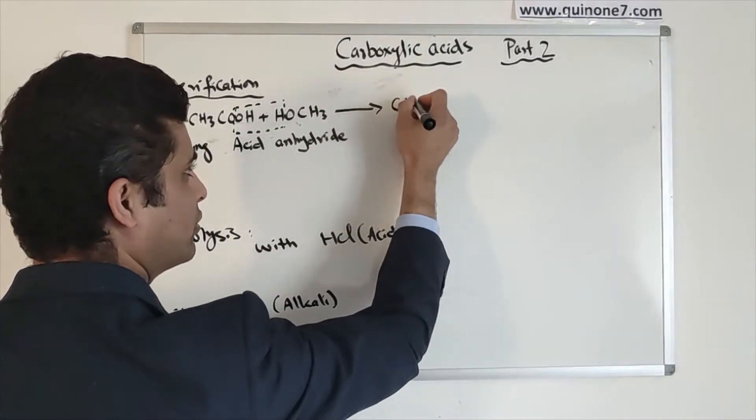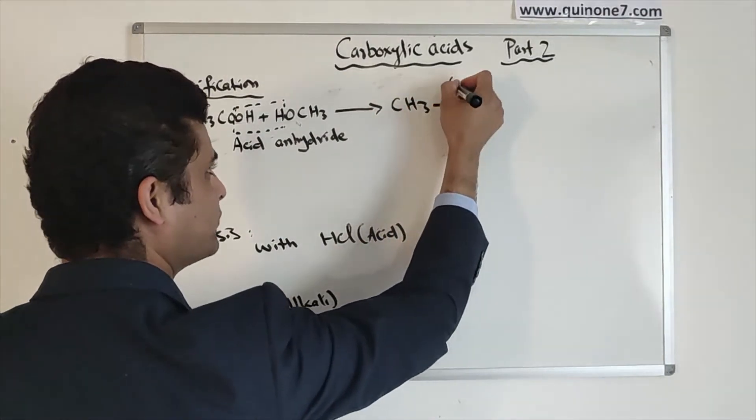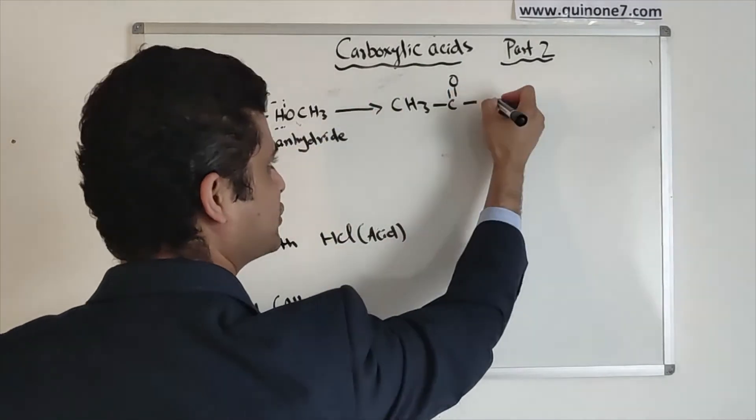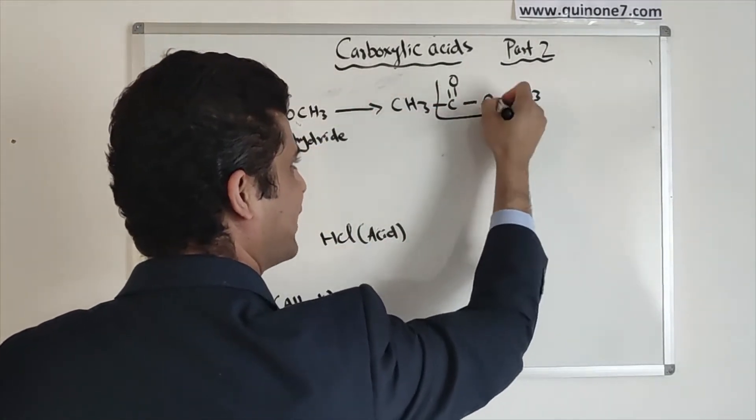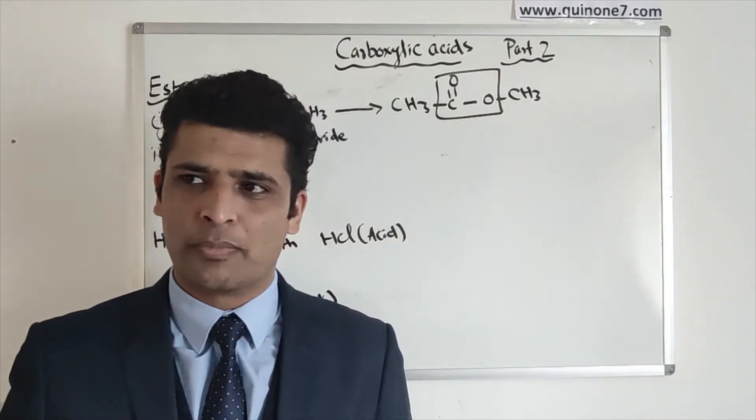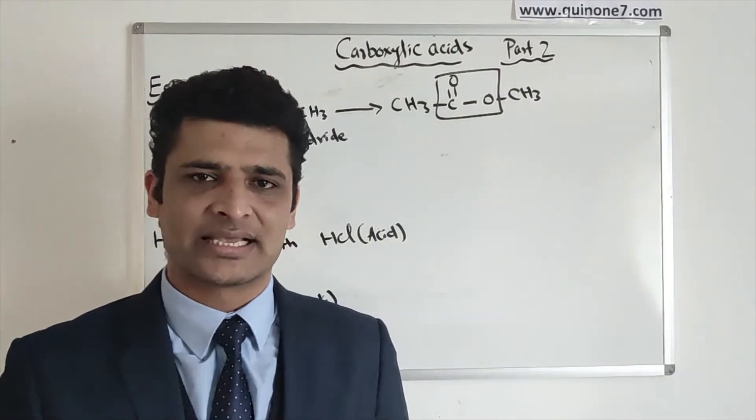The bond will be made between the carbonyl carbon of carboxylic acid and the oxygen of the alcohol, and that will be the ester linkage. So whenever you see C double bond O single bond O, that is an ester linkage.